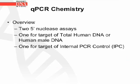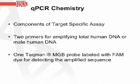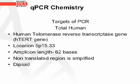The qPCR chemistry uses two 5' nuclease assays — one targeting either total human DNA or human male DNA, and the other targeting the internal PCR control, the IPC. The target-specific assay components are two primers for amplifying total human or male human DNA, and one TaqMan MGB probe labeled with the FAM dye. For total human DNA, the human telomerase reverse transcriptase gene (HTERT gene) is targeted, located at 5P15.33 — chromosome 5, P arm (short arm), band 15, sub-band 33. The amplicon length is 62 bases, a non-translated diploid region.